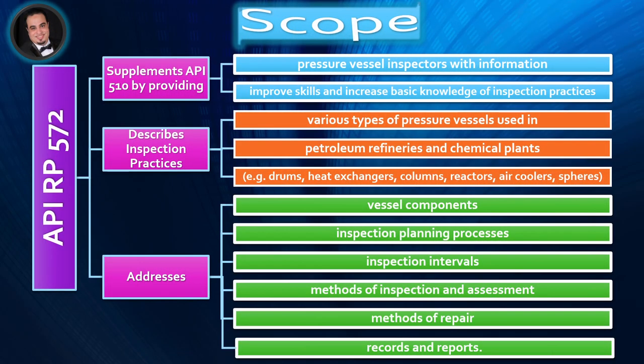Scope. API Recommended Practice 572 supplements API 510 by providing Pressure Vessel Inspectors with information that can improve skills and increase basic knowledge of inspection practices.